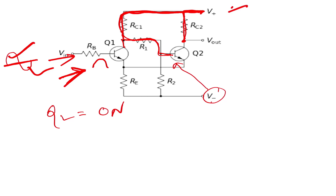So the voltage is on. What is 'on'? What is the collector voltage and the collector current? What is the emitter current? The emitter current is coupled with Q1.